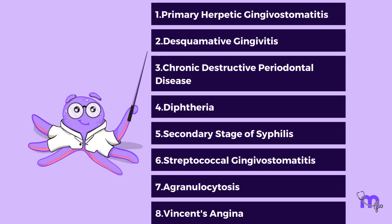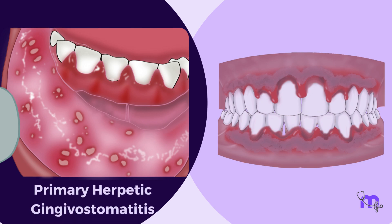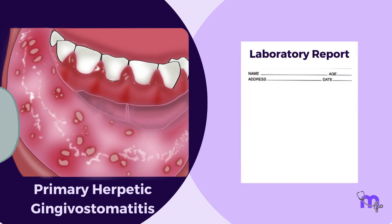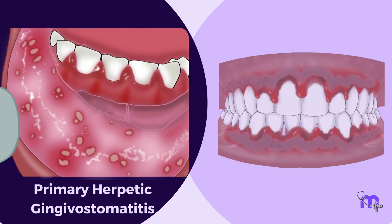Let us proceed to differentiate each condition individually. Primary herpetic gingivostomatitis has a specific viral etiology, with HSV being the main causative factor. In our case, the patient tested HSV negative, allowing me to rule it out. The characteristic vesicles as noted in HSV lesions were also absent.